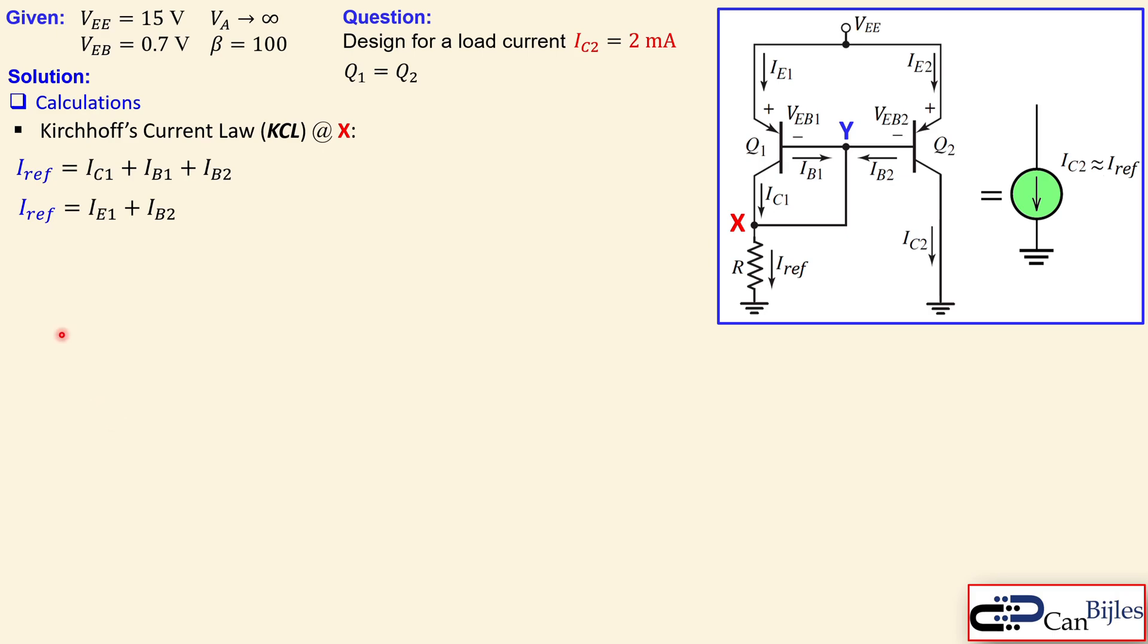So we need IRF in terms of the load current. So the IRF is also written as the combination of the IC1 and IB1, which is actually the emitter current. You can see that here. The emitter current of the Q1 is equal to the base current and the collector current. So we can just combine them.